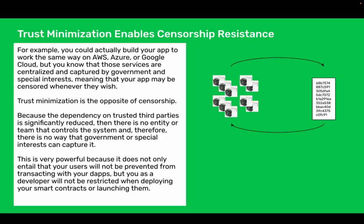Trust minimization enables censorship resistance. For example, you could actually build your app to work the same way on AWS, Azure, or Google Cloud, but you know that those services are centralized and captured by government and special interests, meaning that your app may be censored whenever they wish. Trust minimization is the opposite of censorship. Because the dependency on trusted third parties is significantly reduced, there is no entity or team that controls the system and therefore there is no way that government or special interests can capture it.